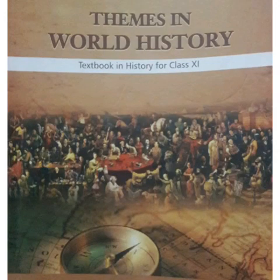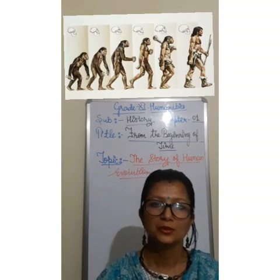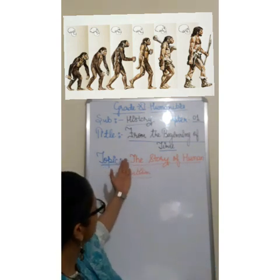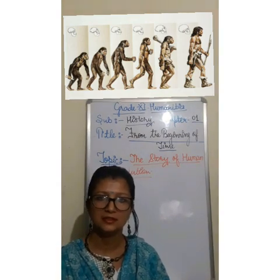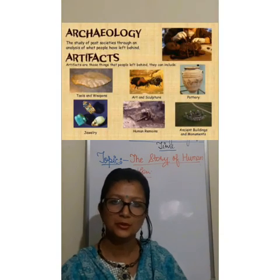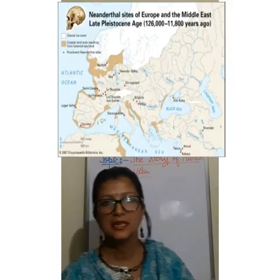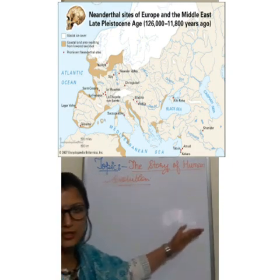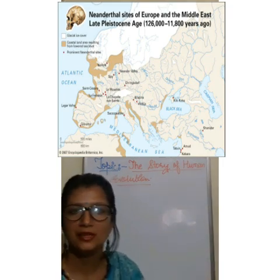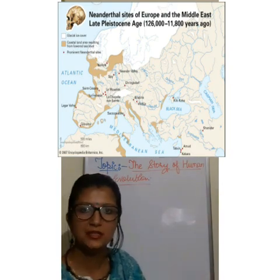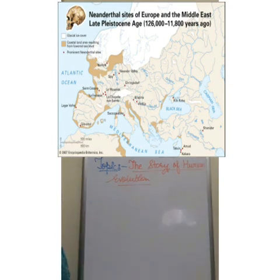A very warm welcome to my dear learners. Children, to understand the story of human evolution, we need to understand how human beings arose on earth. Evolution means the existence of human beings or any species or living organism on earth — that is called evolution. So to understand this, we need to understand through a time zone.